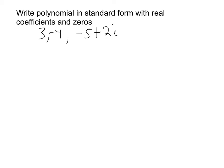Remember, the complex conjugate zeros always occur in pairs. So even though it doesn't list it, we know that negative 5 minus 2i is also a zero. So we'll end up with a fourth-degree polynomial because we have four zeros.